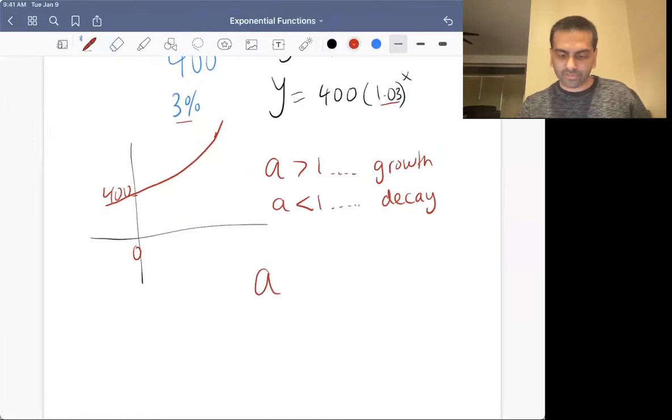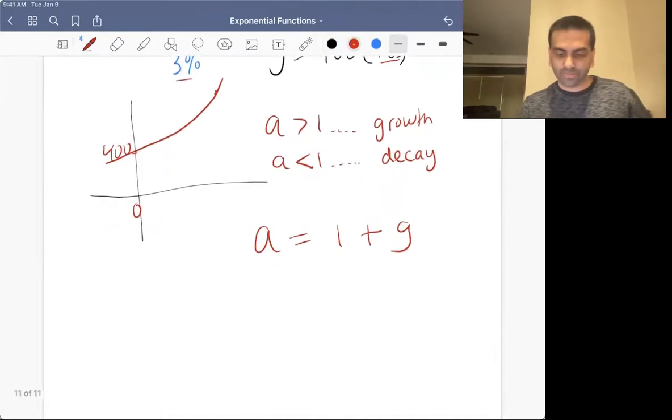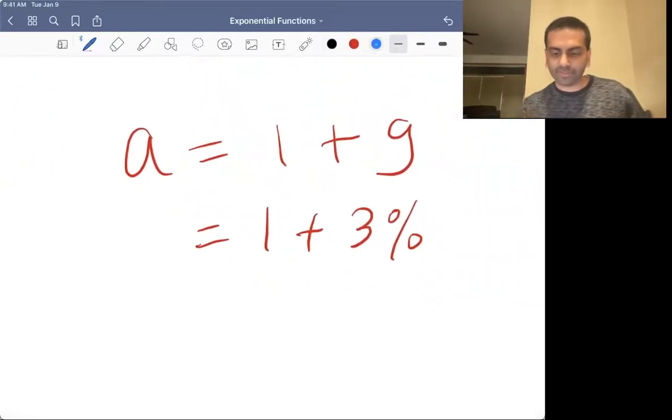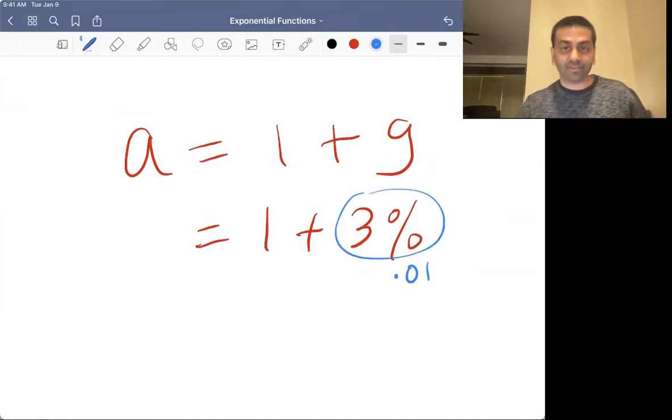How did I get that? Well, specifically, A is essentially 1 plus the percentage that it's growing by. So in this case, it's 3% growth. So A is going to be 1 plus that 3%. Now, how do you do 1 plus 3%? Is 1 plus 3 just 4?